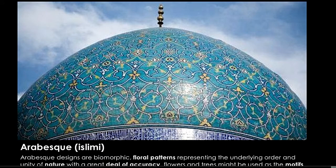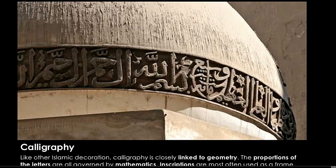Arabesque, or arabesque designs, are biomorphic floral patterns representing the underlying order and unity of nature, with a great deal of accuracy. Calligraphy, like other Islamic decoration, is closely linked to geometry. The proportions of the letters are all governed by mathematical inscriptions.